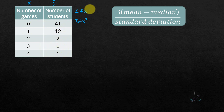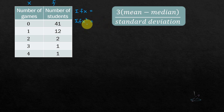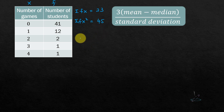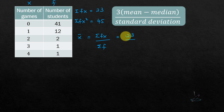For summation of fx², each x is squared first and then multiplied by f: 0²×41, 1²×12, 2²×2, 3²×1, 4²×1. Summation of fx = 23, summation of fx² = 45. The mean x̄ = summation of fx over summation of f = 23 over 57, which equals 0.404.